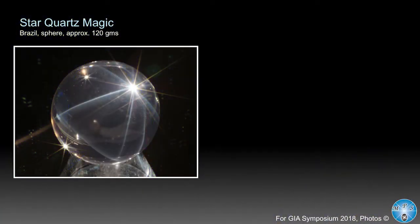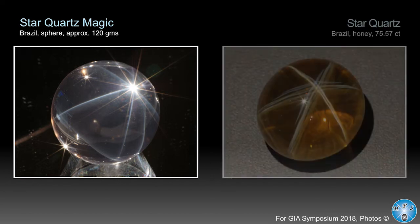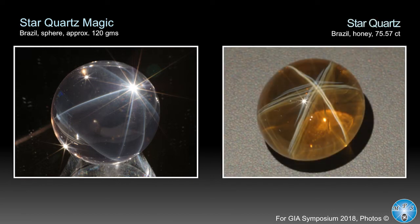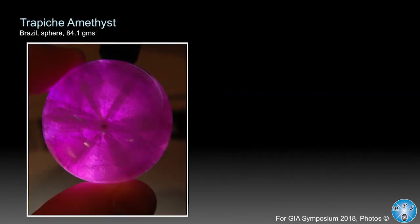Star quartz is another one of the common gemstones — very magical. There is a sphere shown with a lovely light effect. Brazil is another source — honey-colored star quartz. Amethyst is one of the very few stones that does not show a star in epi-asterism, that is in reflected light. You get all the other colors in quartz — citrine, colorless, rose quartz — showing a star. But in amethyst, you can only get the star in diasterism: using a sphere, you can see the six-rayed star when light is transmitted through it. Very rare.